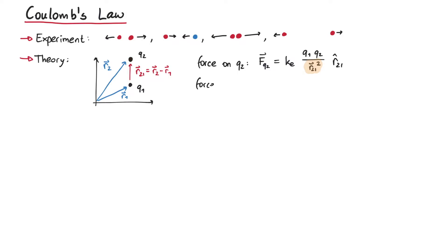Similarly, we can write down the force that is currently acting on q1, where we use the vector r12, which points from q2 to q1. Since r21 is equal to minus r12, the force on q1 is equal to minus the force on q2, which agrees with Newton's third law of motion.